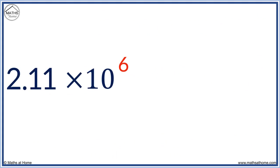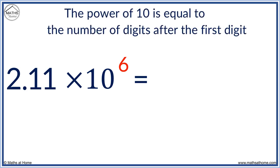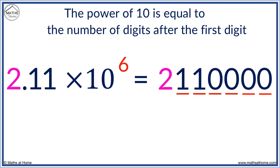This number, 2.11 times 10 to the power of 6, is written in scientific notation. The power of 10 is equal to the number of digits after the first digit. That is, we have the first digit of 2 and then 6 more places. We fill these places with the remaining digits in the number followed by zeros. That is, we have a 1, another 1, and the remaining spaces are zeros. 2.11 times 10 to the power of 6 equals 2,110,000.